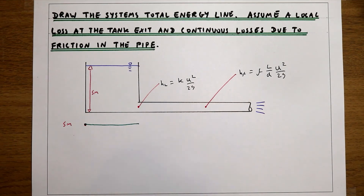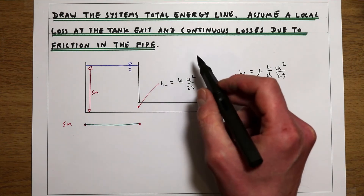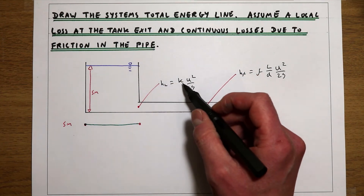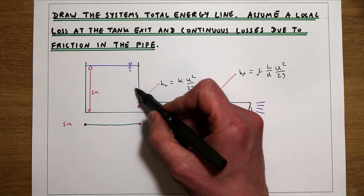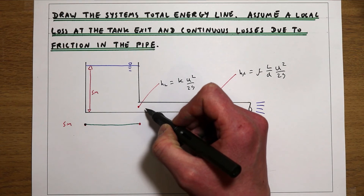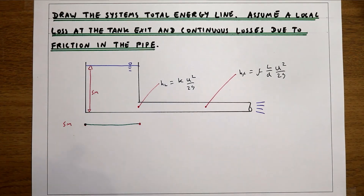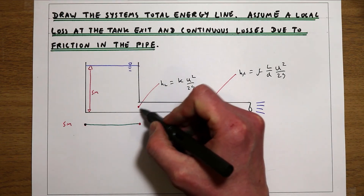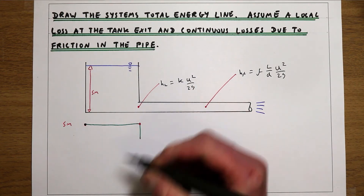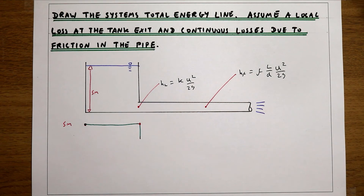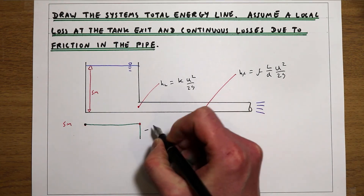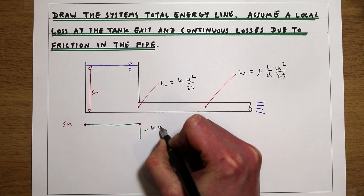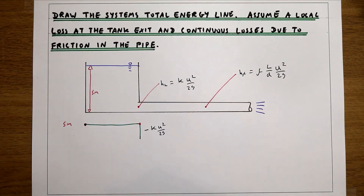When we get to the pipe exit from the tank, we're told that we have a local loss equal to k·u²/2g. That local loss is going to be a loss of energy due to the water trying to force its way into this pipe, and that's going to be a sudden loss of energy. Because it's a local loss occurring at this local point, we're going to get a sudden drop in energy equal to k·u²/2g.